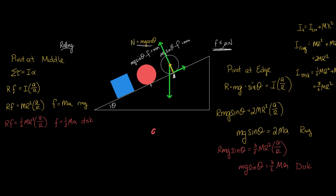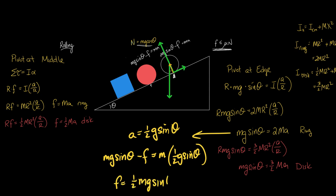So, how about the fact that we have the acceleration here? That seems like the fastest way to go. Acceleration equals one half G sine theta. And M G sine theta minus friction equals M A. So, when I solve for friction, I get one half M G sine theta.